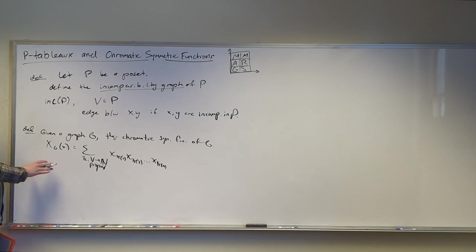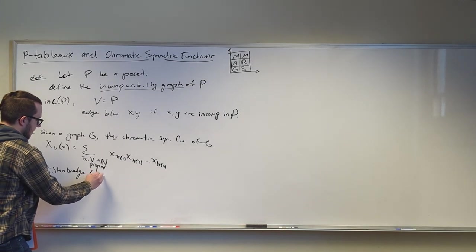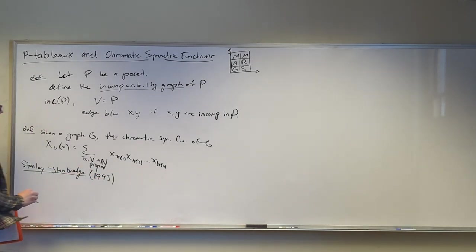So this is our definition of the chromatic symmetric function. We've seen examples of these back in the day, but we're going to use some high-powered theorems to sort of look at this today. In particular, I'll remind you the Stanley-Steinbridge conjecture, which was made in 1993. So this is a symmetric function, which means we can express it in all of our favorite bases of symmetric functions. The conjecture is, it's not stated exactly like this, but this is a similar, I think this implies the original Stanley-Steinbridge conjecture.